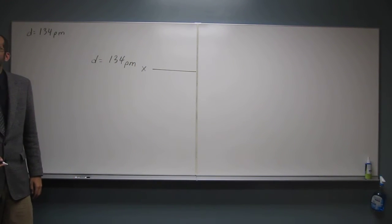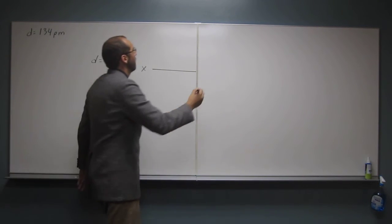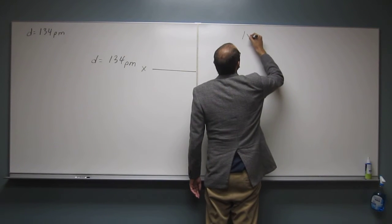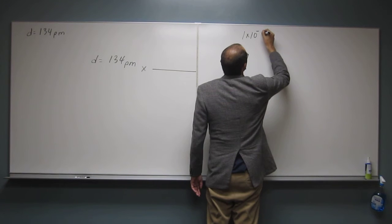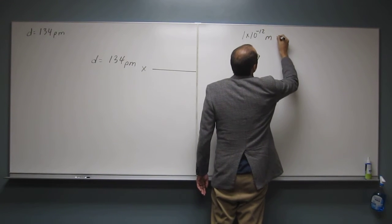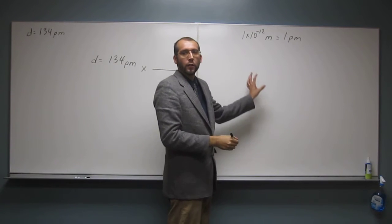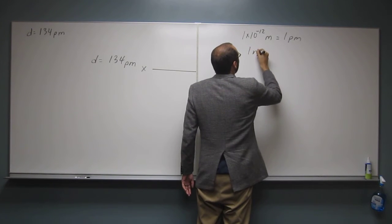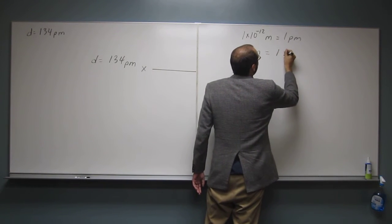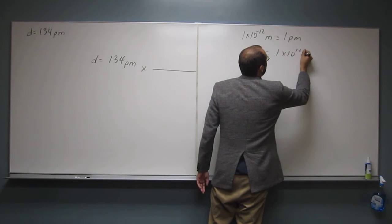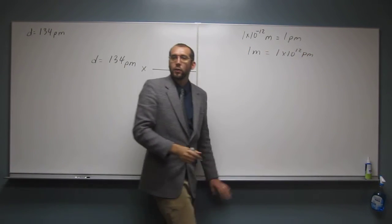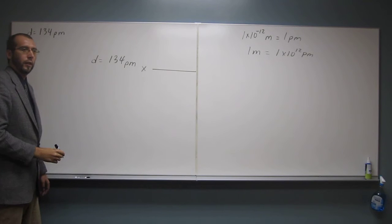10 to the negative 12th, yeah. So for every 1 times 10 to the negative 12th meters, that equals 1 picometer. Or you can say for every 1 meter, that equals 1 times 10 to the 12th picometers. So you can use either one of those conversion factors that you want.